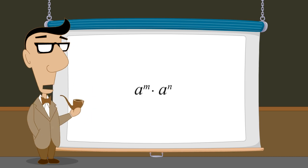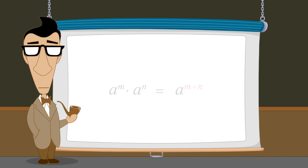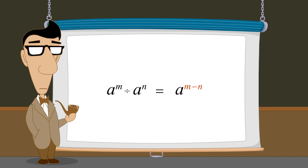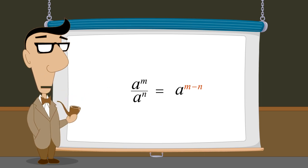We also saw that to multiply exponential expressions with the same base, we add their exponents. Likewise, to divide exponential expressions with the same base, we subtract their exponents.